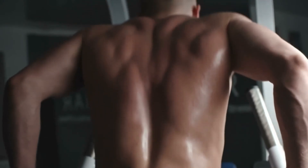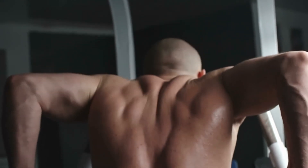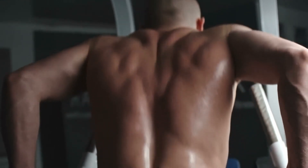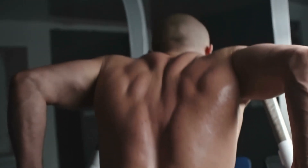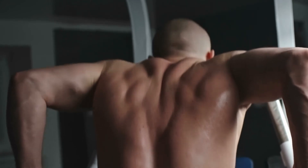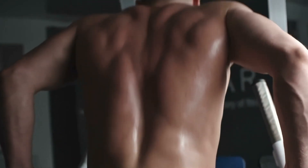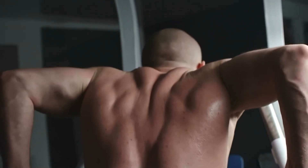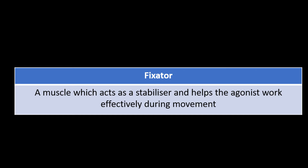The final key term we need to learn for the topic of the muscular system is the term fixator. A fixator is a muscle which acts as a stabiliser and helps the agonist work effectively during movement. A fixator muscle helps with support and posture so that our muscles can perform the required action.